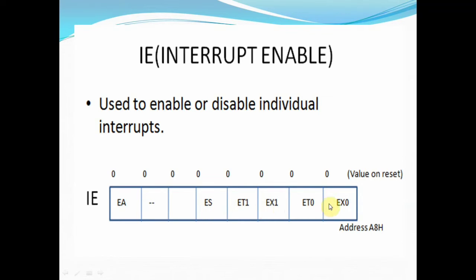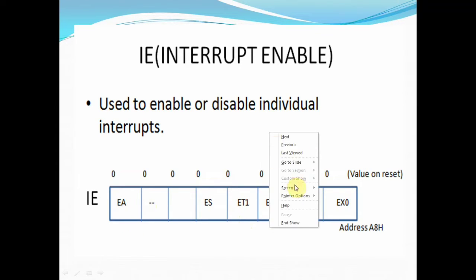By setting these individual bits to 1, we can enable a particular interrupt. But if you want to set or reset a particular interrupt, you must also set the EA bit equal to 1. The EA bit is very important — you have to set EA equal to 1 to allow the rest of the register to take effect. So if you want to activate, say, ET1 (timer 1 interrupt), you have to make ET1 equal to 1 and also make EA equal to 1.